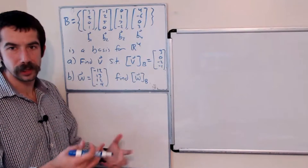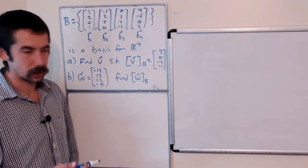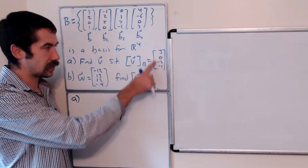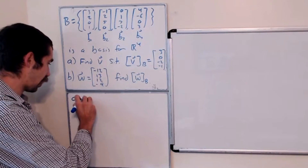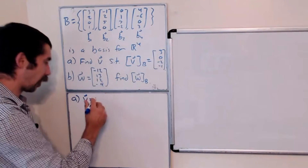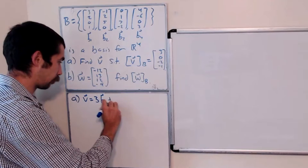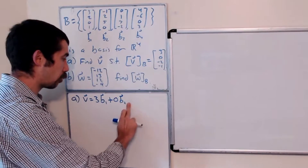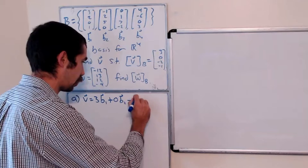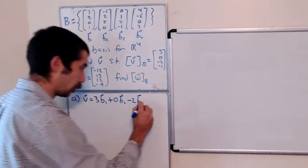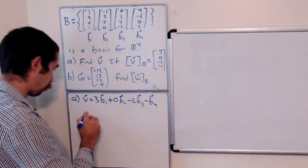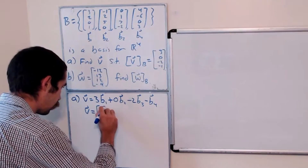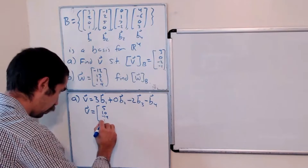So these are two types of questions that you could be asked about B coordinate vectors. For Part A, we know that the B coordinates for V is this vector. Another way to say that is V is equal to 3 times the first basis vector, so 3B1 plus 0B2 plus negative 2B3 minus 1B4. That gives us that V is the vector [5, 10, -14, 4].